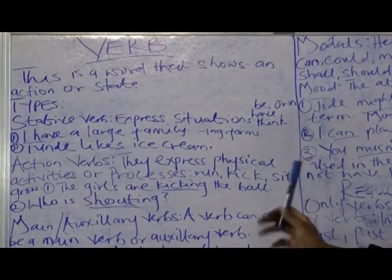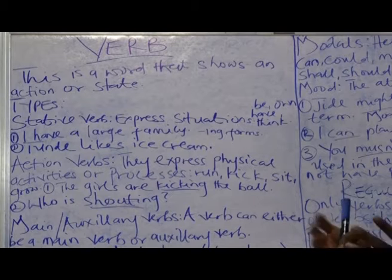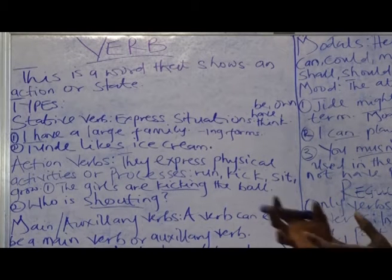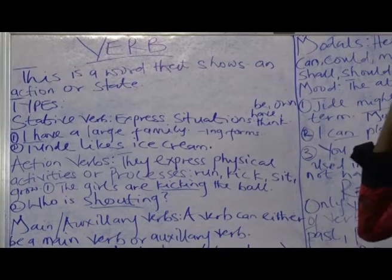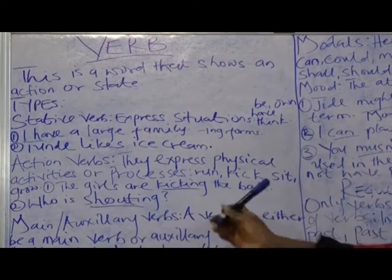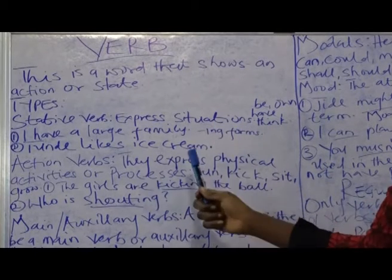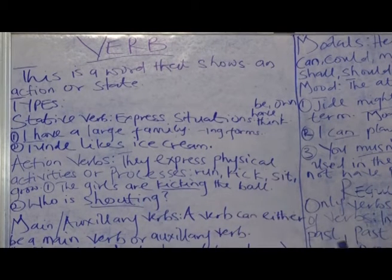Now, action verbs. They express physical activities or processes. Examples: run, kick, sit. I am running. She is kicking the ball. She is sitting down. The girls are kicking the ball. Unlike the stative verb, you can use action verbs in -ing forms. You can use them in -ing forms and they will make complete sense, but you cannot do that with stative verbs.